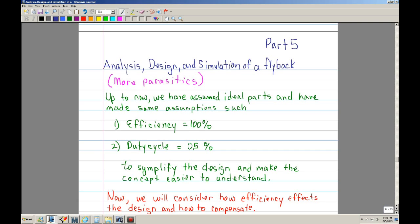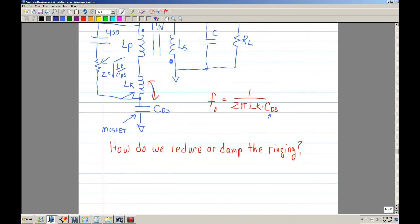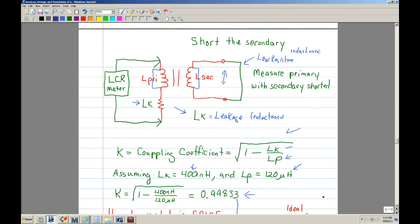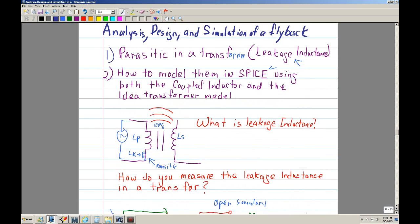Welcome to the Analysis, Design and Simulation of a Flyback Part 5. In the last Part 4, I talked about parasitics in a transformer and the main parasitic that affected the operation of the flyback is the leakage inductance.